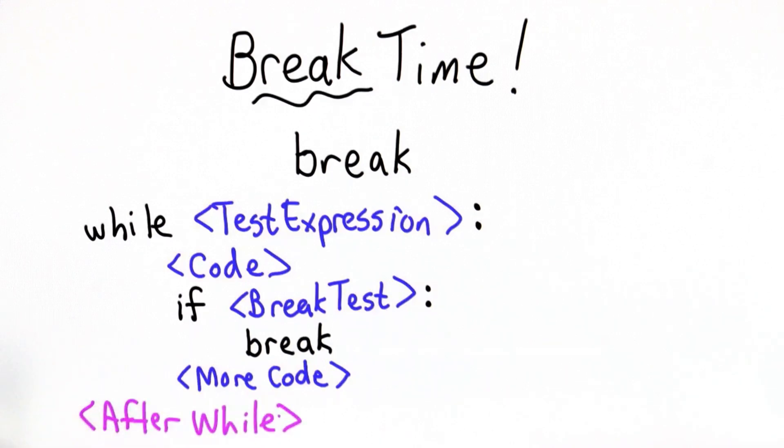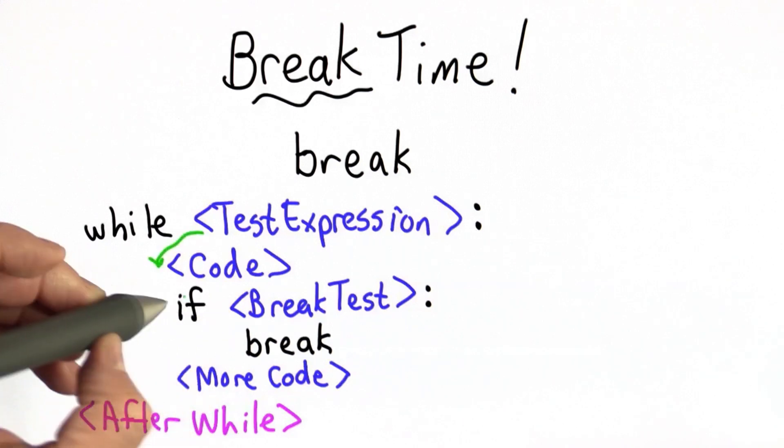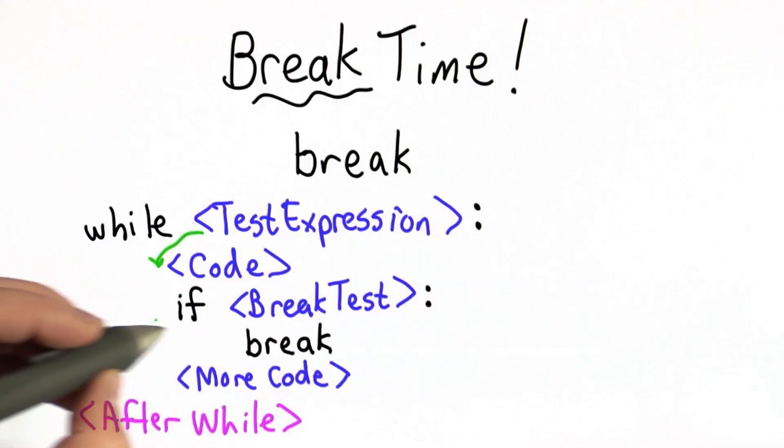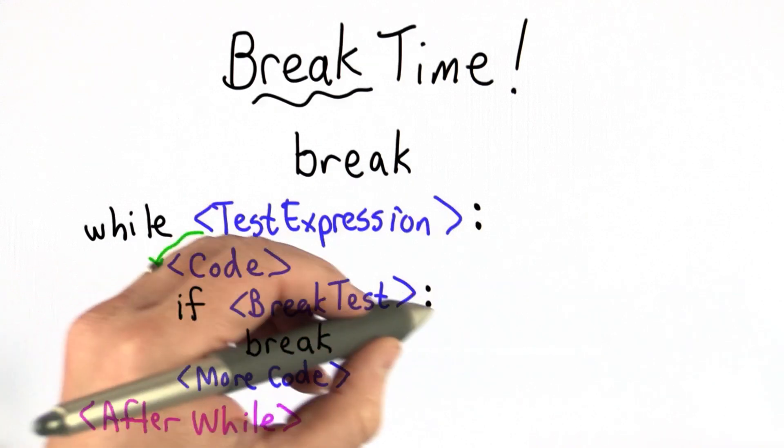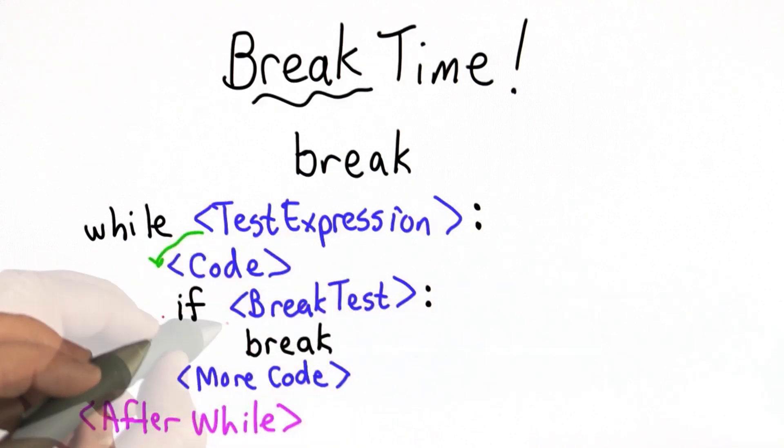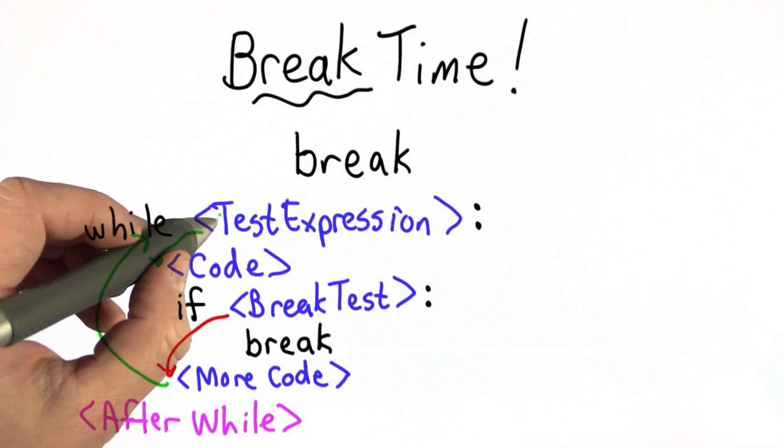So what happens when we execute a loop with a break, it executes like a normal loop. If the test expression is true, we go to the code. If the break test is false, we don't execute the break, we would continue with the more code. We would go back to the loop test, check the test expression again.